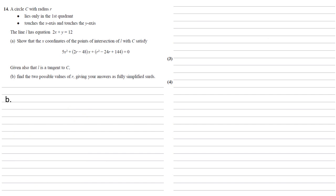We're also given that L is a tangent to C, so we now need to find the two possible values of r, giving our answers as fully simplified surds. So if L is a tangent to C, it means it touches it exactly at one point, hence there's only one solution.